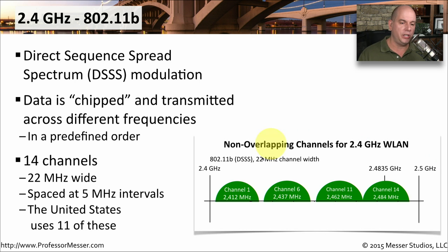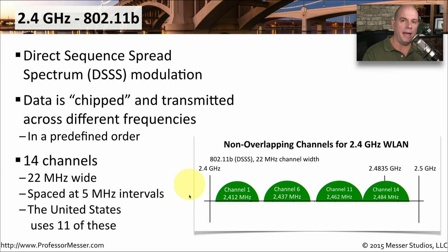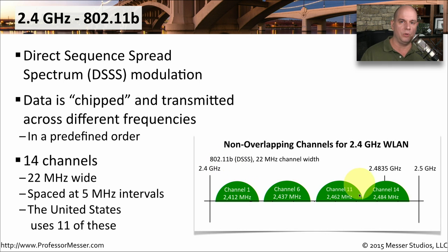That's why we have certain channels that do not overlap. With 2.4 GHz on 802.11b, channel 1, channel 6, and channel 11 do not overlap with each other, at least not here in the United States. In the US, we can't use any frequencies above channel 11, but it can go all the way up to channel 14, which may be in use in your particular country. So what you'll generally find is if it is an 802.11b network, it is running on channel 1, channel 6, or channel 11.